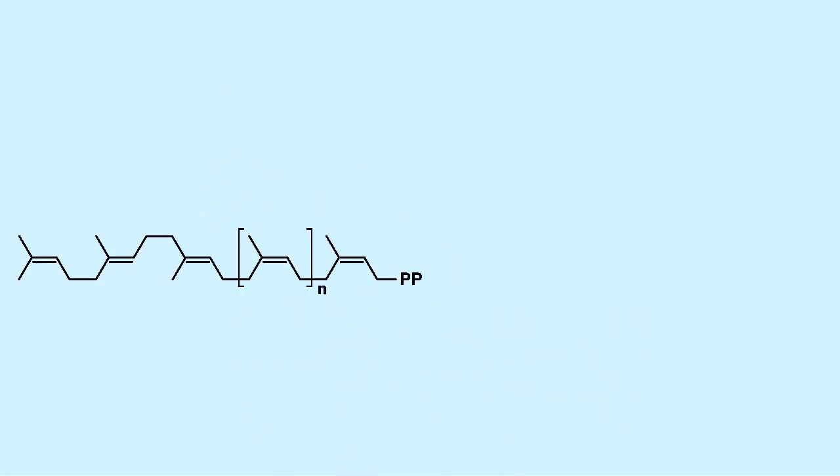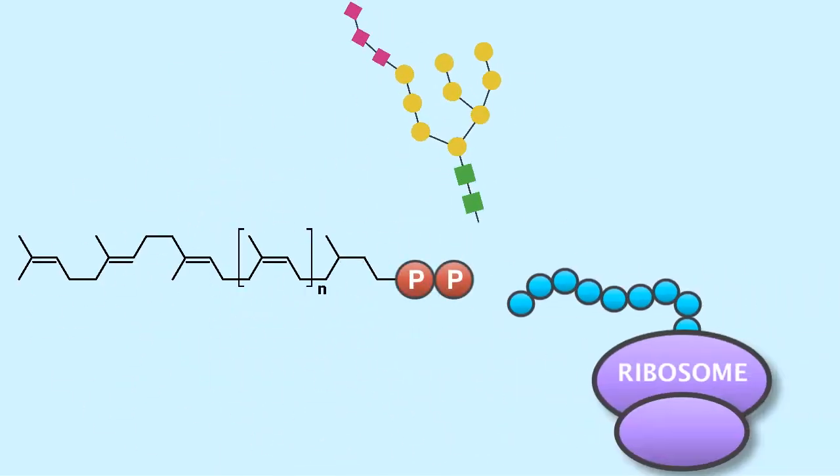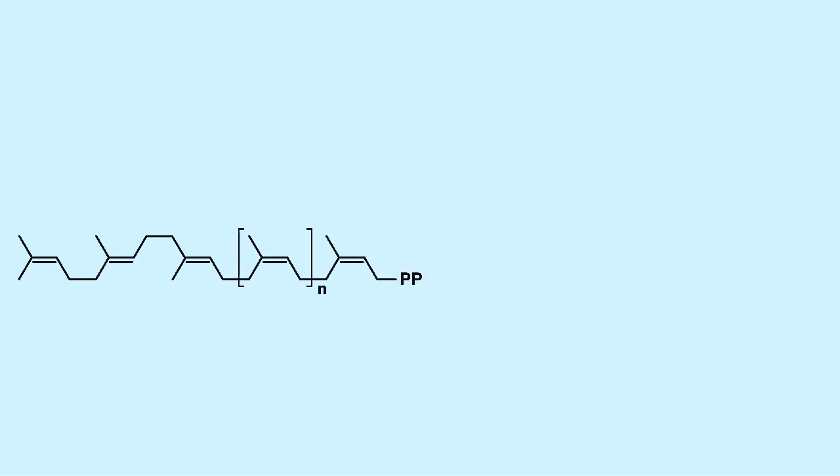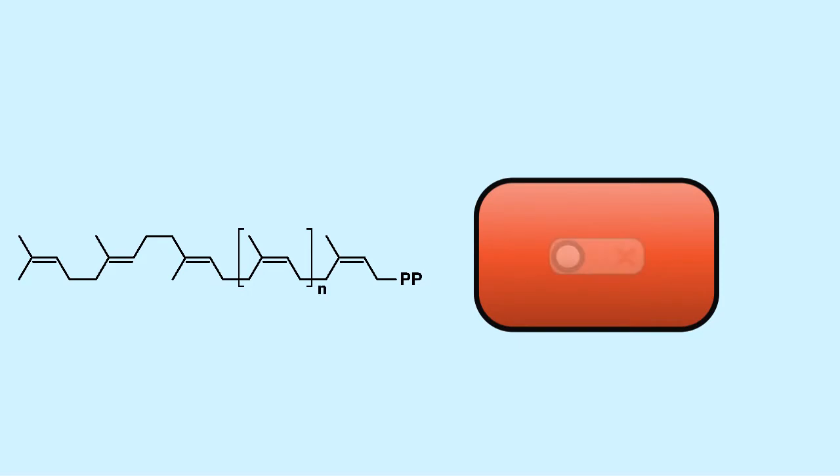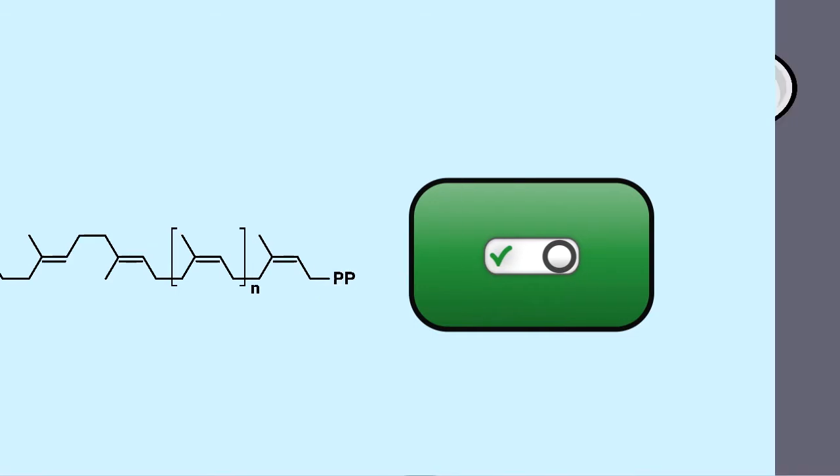While most polyprenols are involved in protein glycosylation, Hoffman and co-workers uncovered that these molecules have an unexpected role. They upregulate the activity of CHS3, a key protein involved in spore wall synthesis. Let's see how this works.